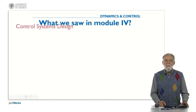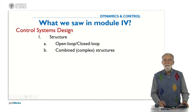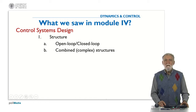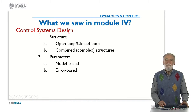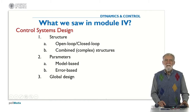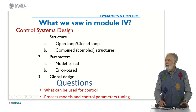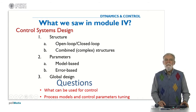In this module we have seen that to design a controller we need to define the structure. This structure could be open loop or closed loop, and we must combine both schemes to get some complex structures. Then we need to define the parameters based on the model or based on the error of the system. Finally we see some more complex structures — what we call the global design. The questions we raise are: what information can be used for control, which kind of process models, and which control parameters we are going to tune.